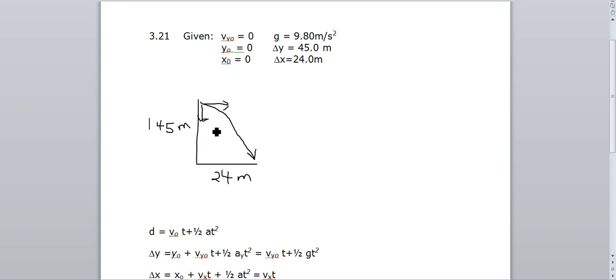And I already alluded to that up here, where you have your initial y, your initial x as being zero. Your velocity in the y direction initially is zero, and you're looking for the initial velocity in the x direction.